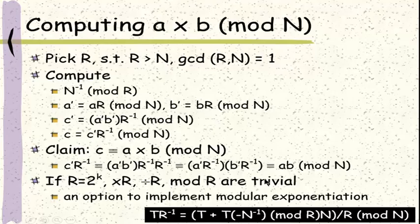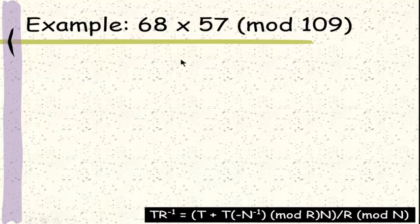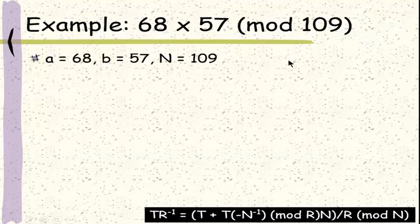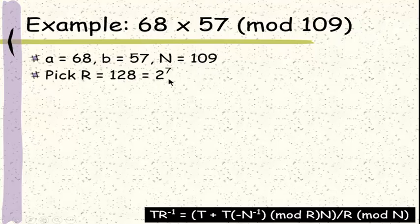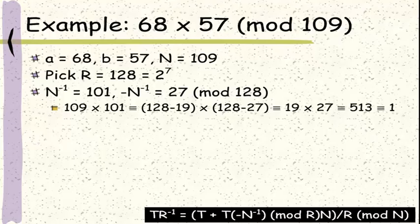Now let's see an example. We want to compute 68 times 57 modular 109. So we have a equal to 68, b equal to 57, and n equal to 109. We pick r as a power of two greater than n, so we pick r equal to 128, which is 2 to the power of 7. Then we compute n inverse mod r, which gives us 101, because 109 times 101 equals 1 modular 128. And when we put a negative sign here, this becomes 27.